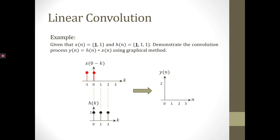In the third step, we have to multiply X with H to produce output Yn. At negative 1, since there is no value at H for n equal to negative 1, the multiplication is 0. For n equal to 0, we multiply X with H: 1 multiplied with 1. So the total value for this convolution is 1.